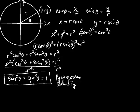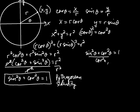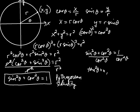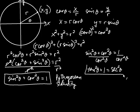If you take that identity and divide both sides by cosine squared, sine²θ + cos²θ = 1 becomes: sine squared over cosine squared is tangent squared, cosine squared over cosine squared is 1, and 1 over cosine squared is secant squared. So you get tangent²θ + 1 = secant²θ. This is another Pythagorean identity involving tangent and secant.